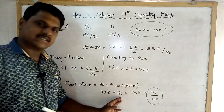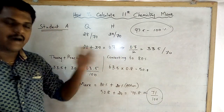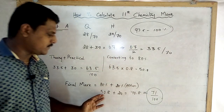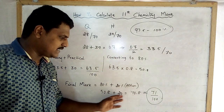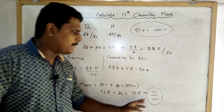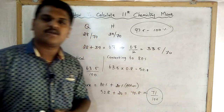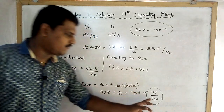You convert the attendance directly into 20 marks. So 50.8 plus 20 equals 70.8. Approximately, the student's mark is 71 out of 100.